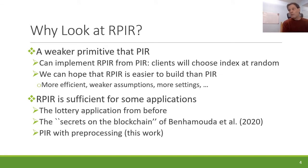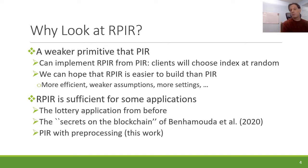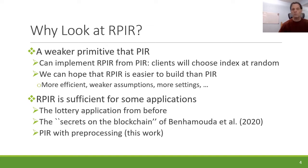Why look at it? One thing that should be obvious is that RPIR is a weaker primitive than PIR, because if you could do PIR you can definitely do RPIR by the client choosing a random index and running the PIR protocol. So we can hope that RPIR is easier to build — maybe more efficient, maybe using weaker assumptions, maybe usable in settings where PIR is impossible. On the other hand, RPIR is sufficient for some applications: the lottery example I gave, an application to the Secrets on the Blockchain architecture of Malchiodi et al. from TCC last year, and also a nice application to PIR with preprocessing.